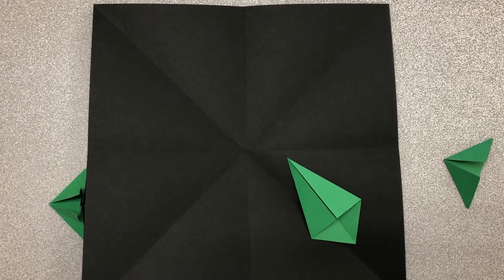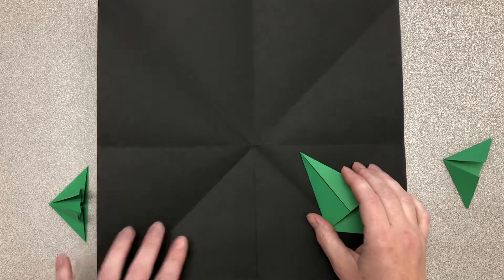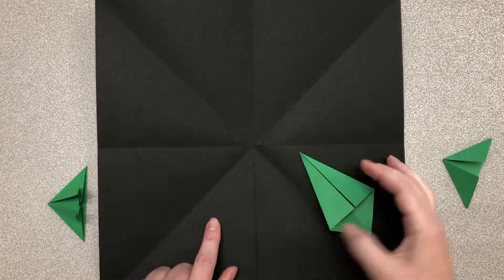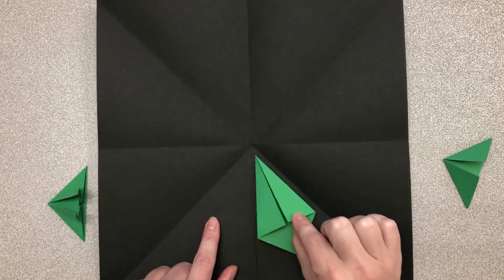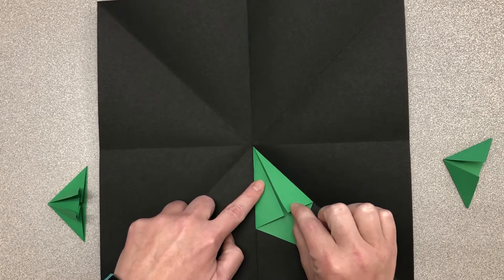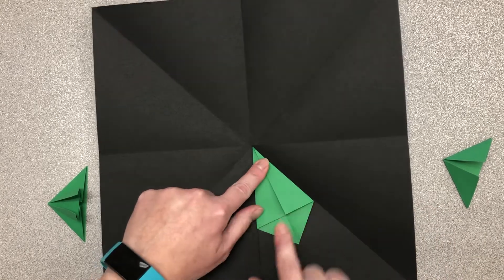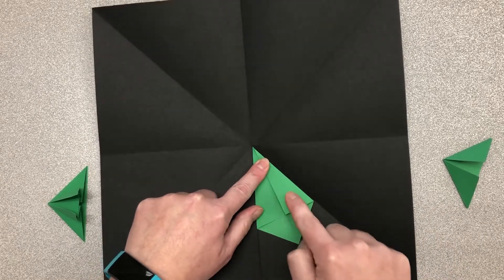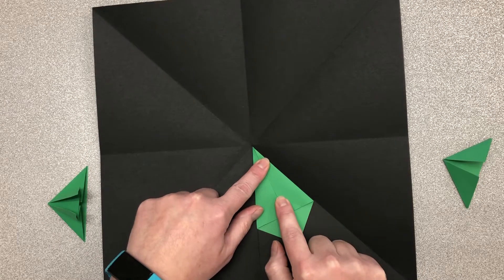Once you have your big black paper folded so that you can see your sections on here, you can tell that the kite fold actually fits in one-eighth of the section. So if I'm going to put a kite fold right here,